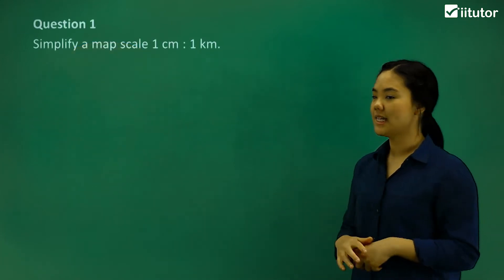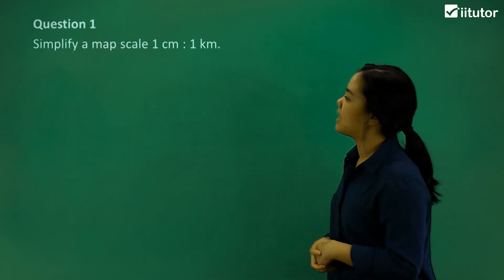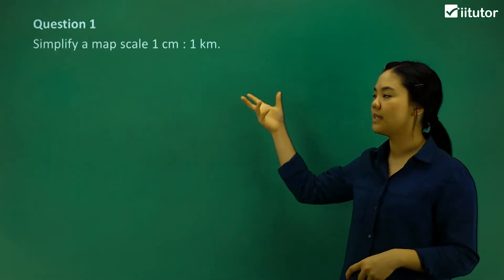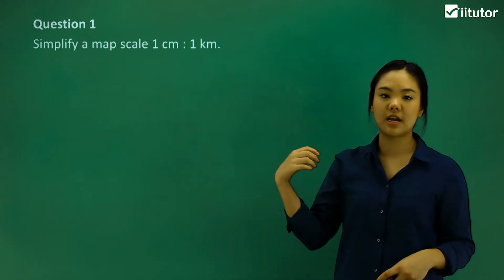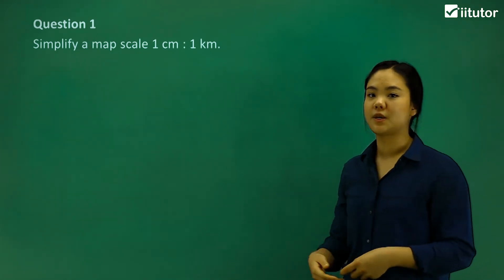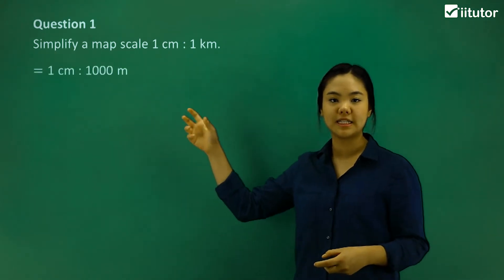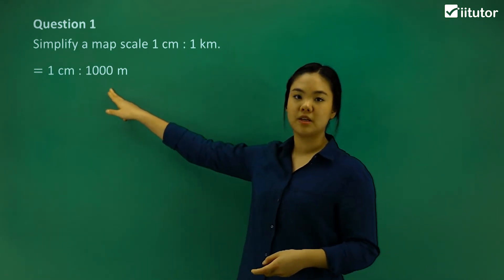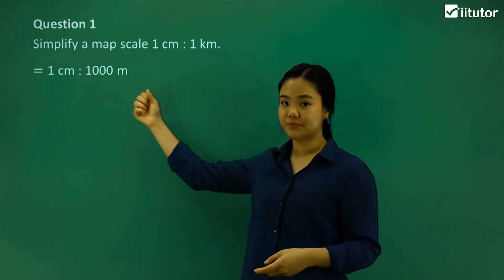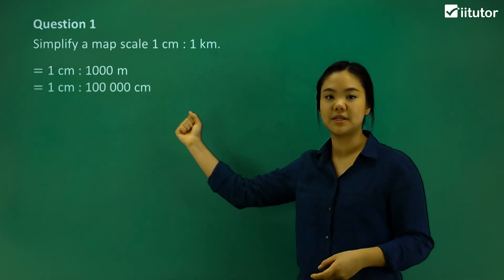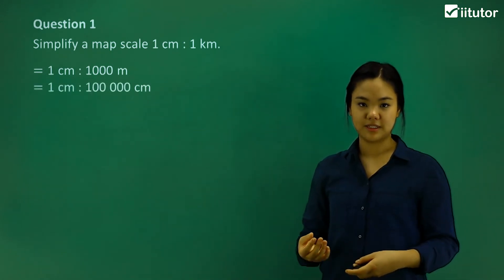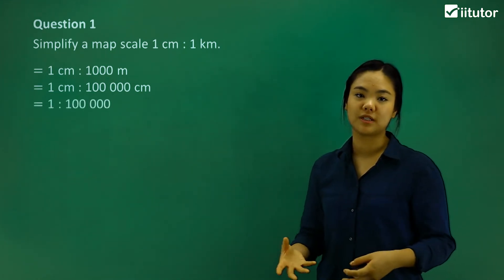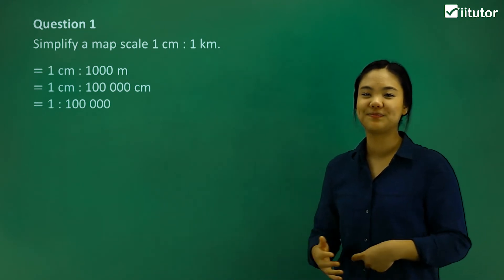Let's try the first question. It says, simplify a map scale one centimeter to one kilometer. First of all, we want to make the units the same. So one centimeter is to 1,000 meters, because that's also one kilometer. How many centimeters in 1,000 meters? It's 1 centimeter to 100,000 centimeters. So we get rid of the centimeters. The ratio is just 1 to 100,000.